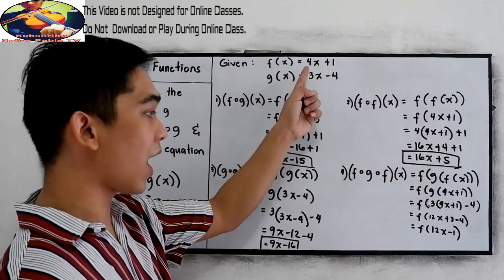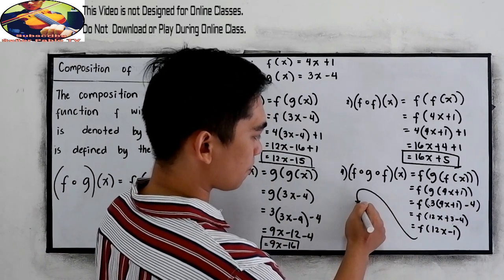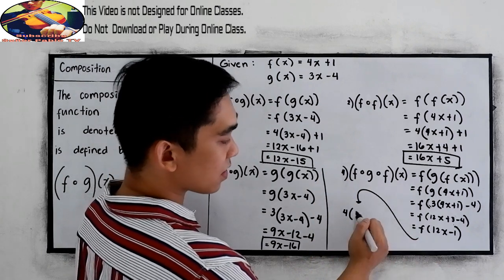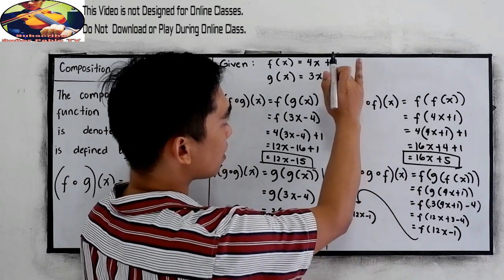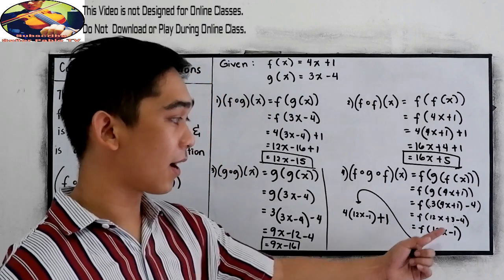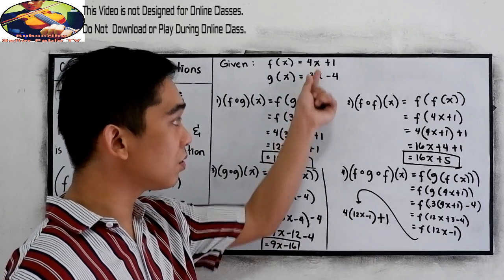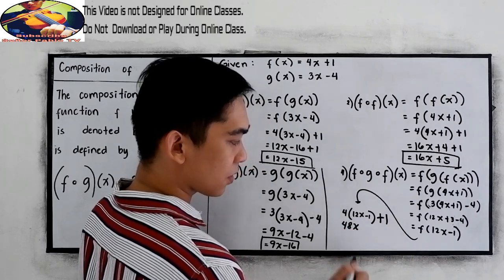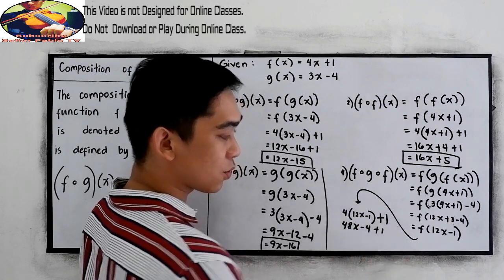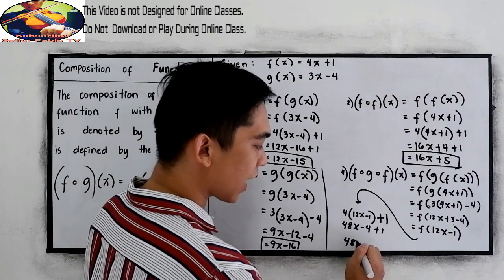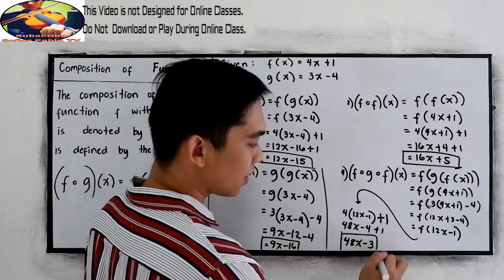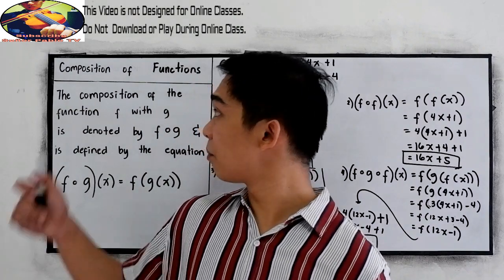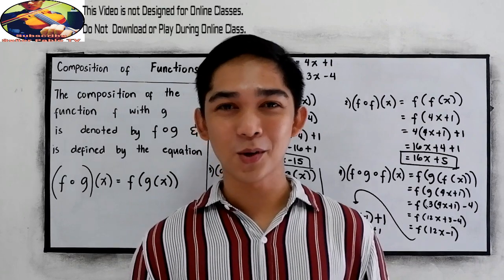Go to f of x: we have f of (12x minus 1), so 4 times (12x minus 1) plus 1. Our x is 12x minus 1, so change x to 12x minus 1. Distribute 4 times 12x: that is 48x. 4 times negative 1 is negative 4, then copy plus 1. Combining: 48x and negative 4 plus 1 is negative 3. So the value of f composed of g composed of f of x is 48x minus 3. That's how to solve composition of functions. Thank you for watching Senior Pablo TV.